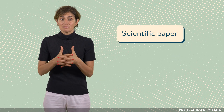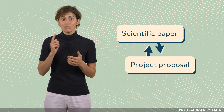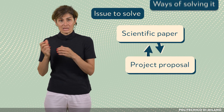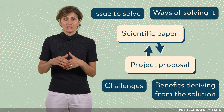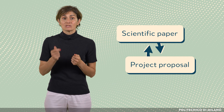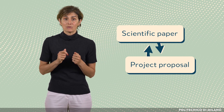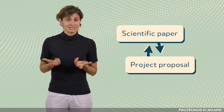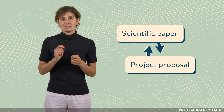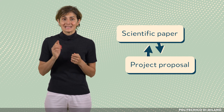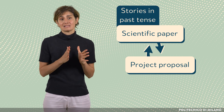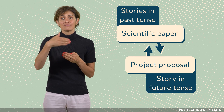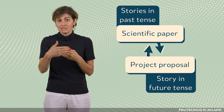It must be noted that a scientific paper is under some respect similar to a project proposal, where we also have an issue to solve, ways of solving it, challenges, benefits deriving from the solution, etc. Usually papers do report on the results of a project, so there is a reason why they are similar. The main difference is the paper is the story of something that has been done, a story in past tense, while a project proposal is a story in future tense, of something you mean to do.